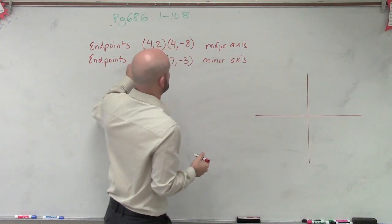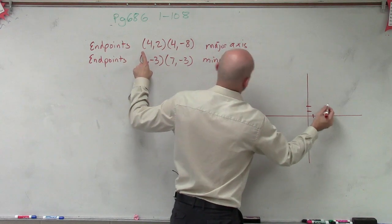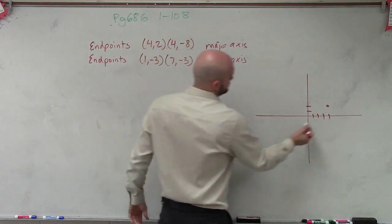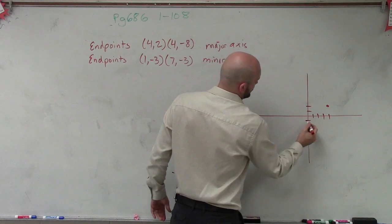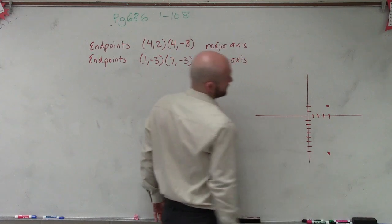My endpoints of my major axis are at (4,2): 1, 2, 3, 4, and then (4,-8). So at 4, going down 1, 2, 3, 4, 5, 6, 7, 8.